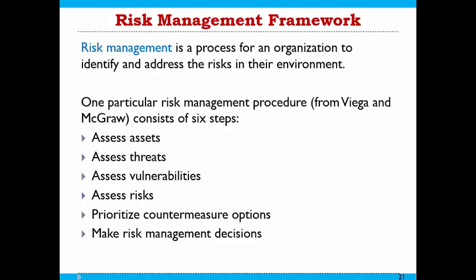Once all risks have been assessed, you prioritize your countermeasure options — you cannot handle computer security from all perspectives simultaneously. On the basis of the different levels of threat and the damage each can cause, you must make risk management decisions about what steps should be taken to prioritize damage from certain types of risks and which need to be handled first.